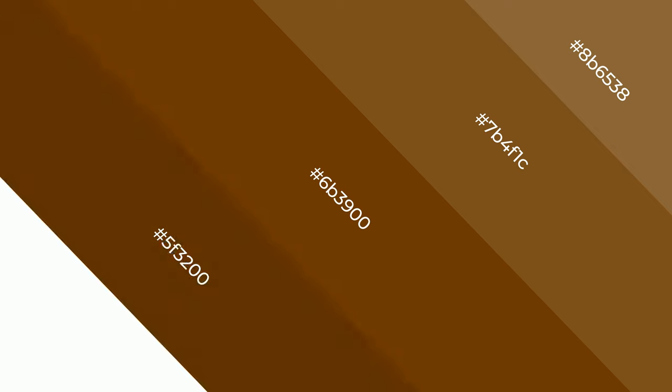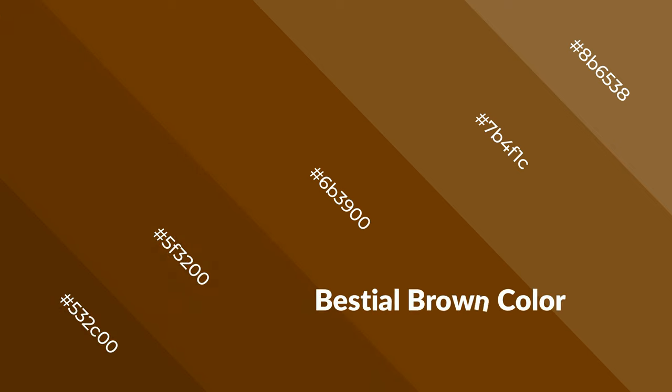Warm colors are symbols of warmth, fire, heat, and sunshine. It also evokes joy, passion, love, and even anger. You can see them used in restaurants and gyms.